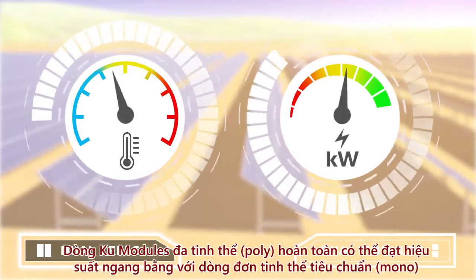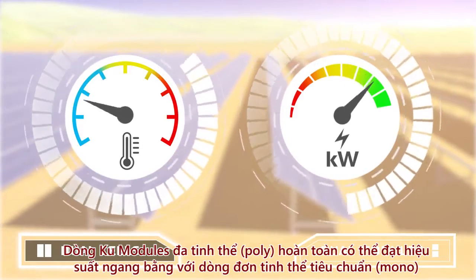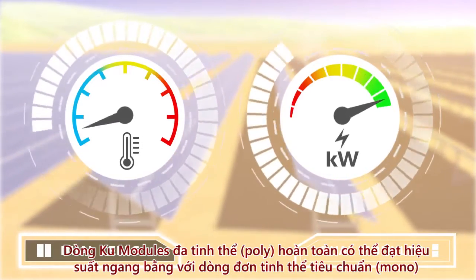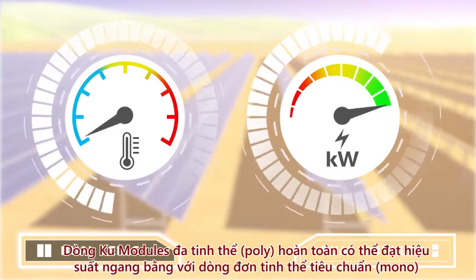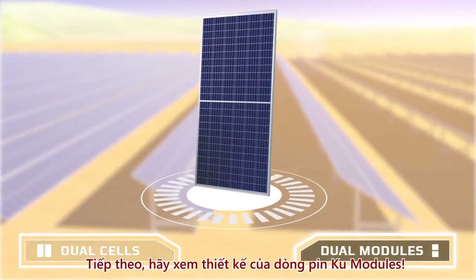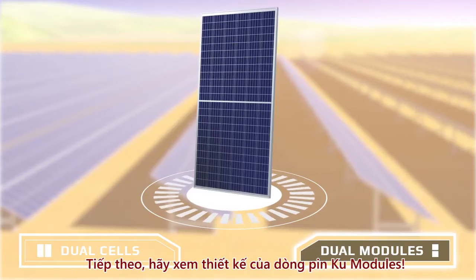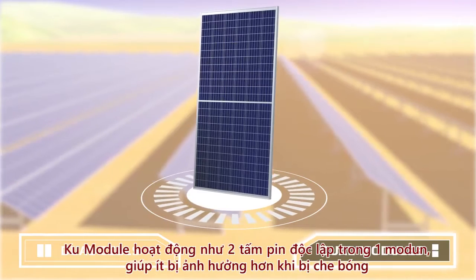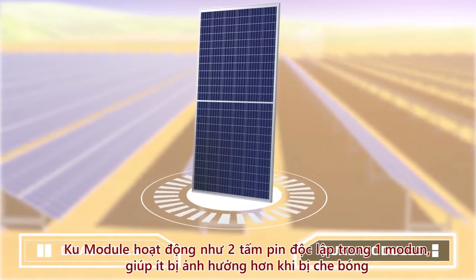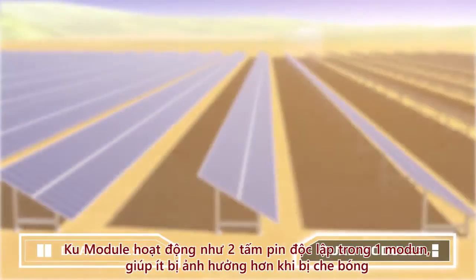Polycrystalline KOO modules are available at the same power classes as standard monocrystalline modules. Next, let's look at dual module design. KOO modules operate like two modules in one, which gives KOO modules better shading tolerance.